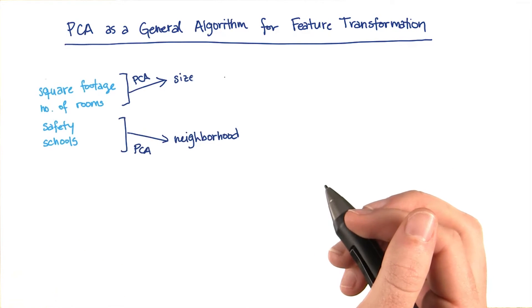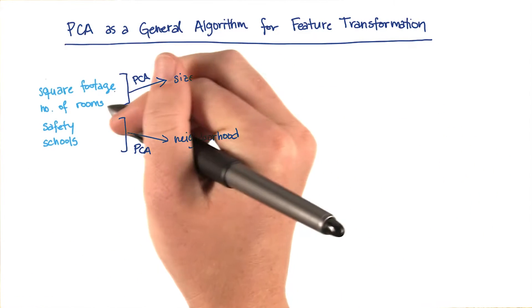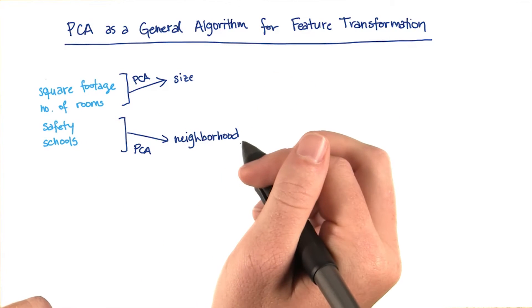Remember what we started with was four features that we manually split up into two categories. We said square footage and number of rooms are related to size, and the safety and schools are related to the neighborhood.